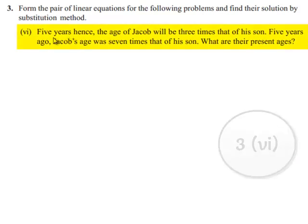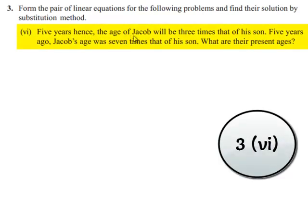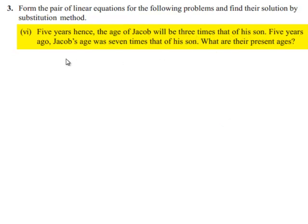Moving on to the sixth bit. 5 years hence the age of Jacob will be 3 times that of his son. 5 years ago Jacob's age was 7 times that of his son. What are their present ages?